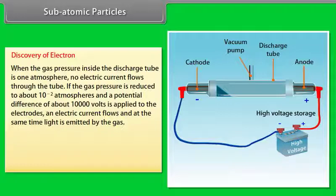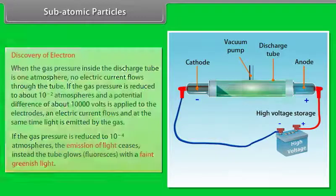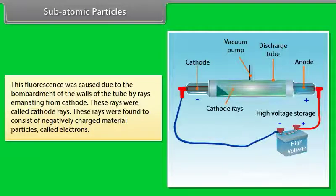If the gas pressure is reduced to about 10 to the power minus 2 atmospheres and a potential difference of about 10,000 volts is applied to the electrodes, electric current flows and light is emitted by the gas. If the gas pressure is reduced to 10 to the power minus 4 atmospheres, the emission of light ceases. Instead, the tube glows with a faint greenish fluorescence caused by bombardment of the walls by rays emanating from the cathode, called cathode rays. These rays consist of negatively charged particles called electrons.